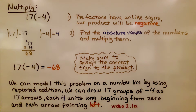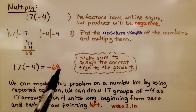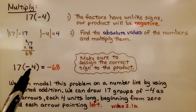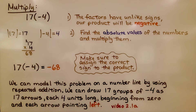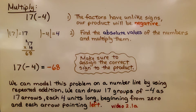We have to make sure to assign the correct sign to the product. If we had written positive 68, we'd get it marked wrong. We can model this problem on a number line using repeated addition — drawing 17 groups of negative 4 as 17 arrows, each 4 units long, beginning from zero and each arrow pointing left.